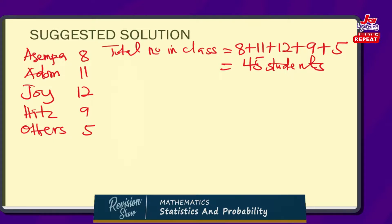Remember, there was nobody in the class who did not make a preference for any of the channels, meaning all of them said they liked something. So after adding all their preferences, that gives us the total number of people in the class. Then part B said we should find the modal channel. When we talk about the modal channel, we are referring to the channel that had the most number of preferences. Mode is the data that corresponds to the highest frequency — in other words, the highest occurring item in the observation.